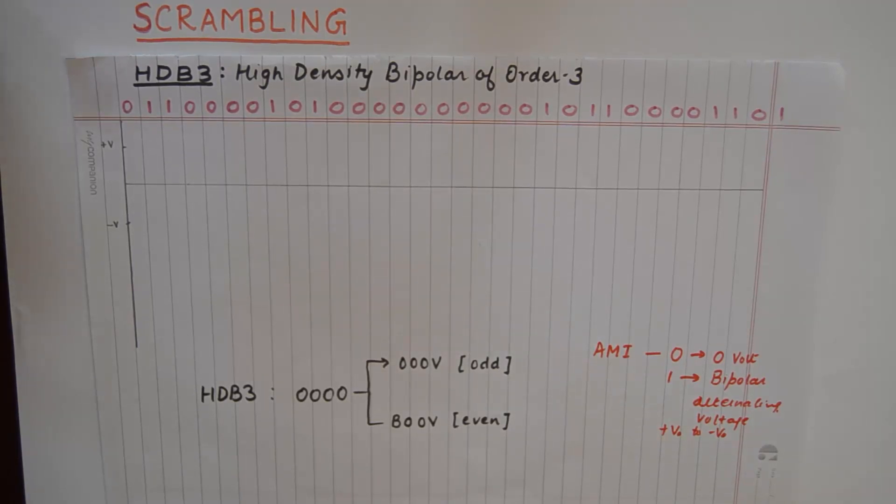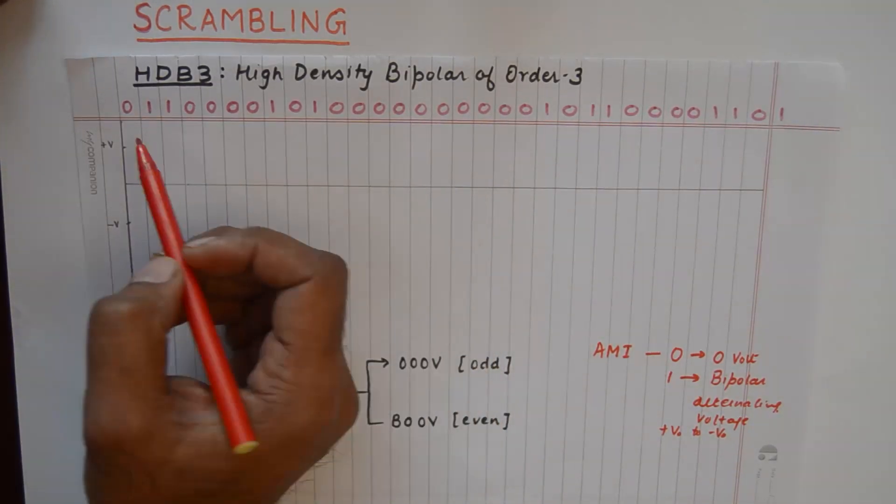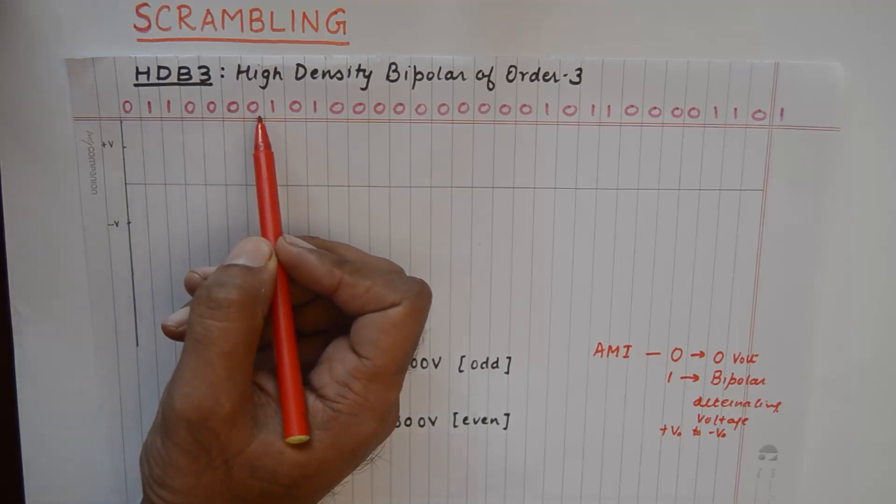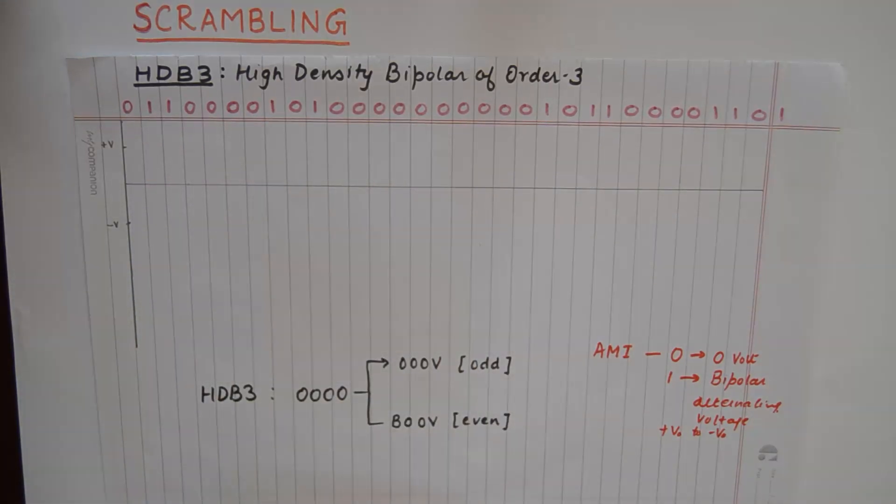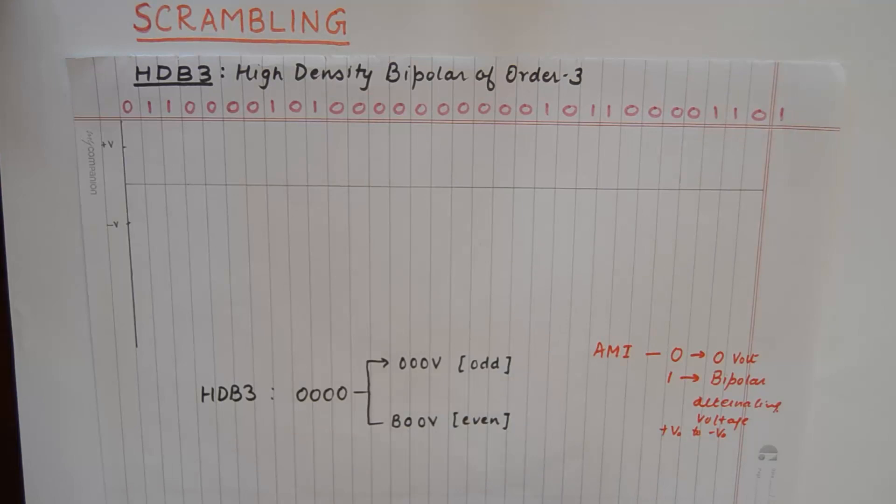So that being said, we will talk about this HDB3 scheme. Now if you look at this code, in this code you have 011 and then four zeros are occurring simultaneously. So then we have 101 and a lot of zeros occurring and so on and so forth.